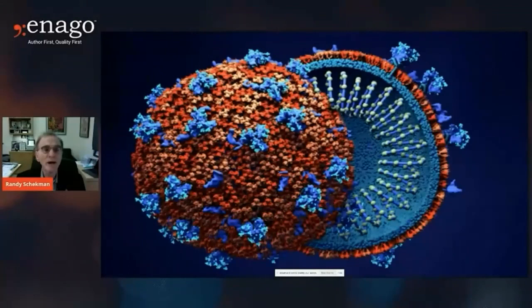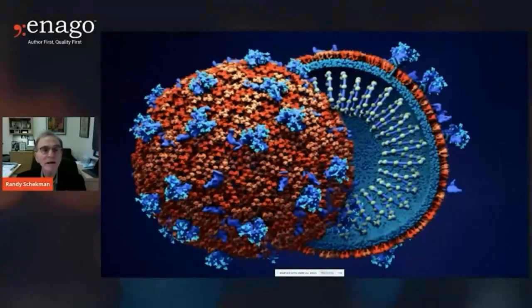It's a membrane that has lipids on its surface, so it's kind of a greasy shell. And most importantly, proteins — one of which is called the spike protein — that allows the virus to engage a cell.